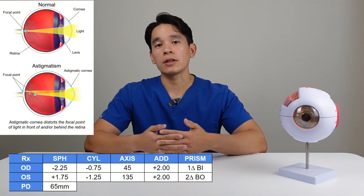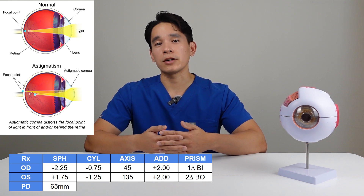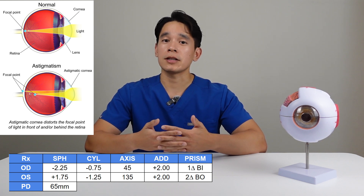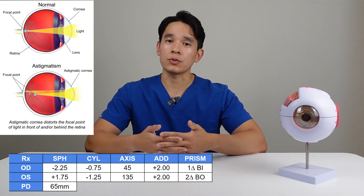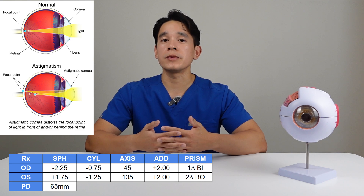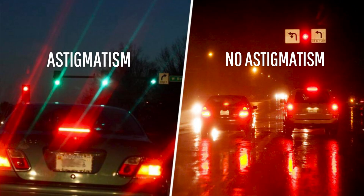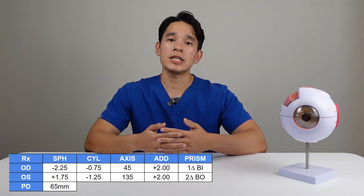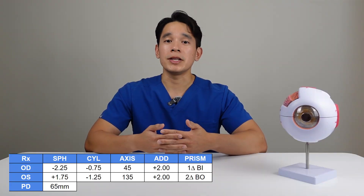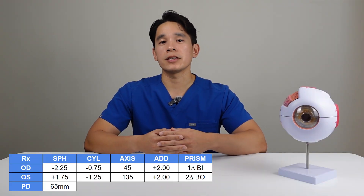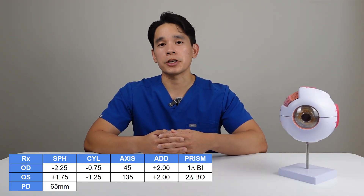As a result, light entering your eye does not focus at a single point, but instead focuses at multiple points within your eye, causing images to appear blurry or distorted. If you see 'sphere' written under cylinder, it means that you don't have any astigmatism correction.